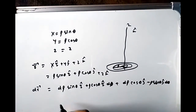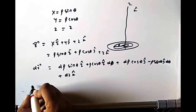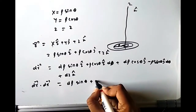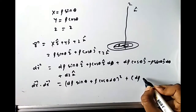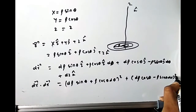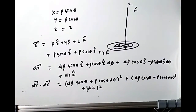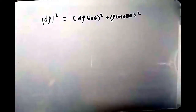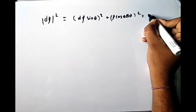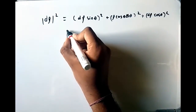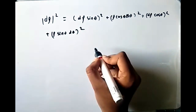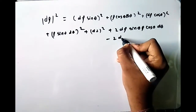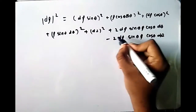Computing |dr|² = dr · dr, we get (dρ sin θ + ρ cos θ dθ)² + (dρ cos θ − ρ sin θ dθ)² + dz². Expanding and noting that the cross terms 2dρ sin θ · ρ cos θ dθ and −2ρ dρ cos θ sin θ dθ cancel, we are left with dρ²(sin²θ + cos²θ) + ρ² dθ²(cos²θ + sin²θ) + dz², giving |dr|² = dρ² + ρ² dθ² + dz².